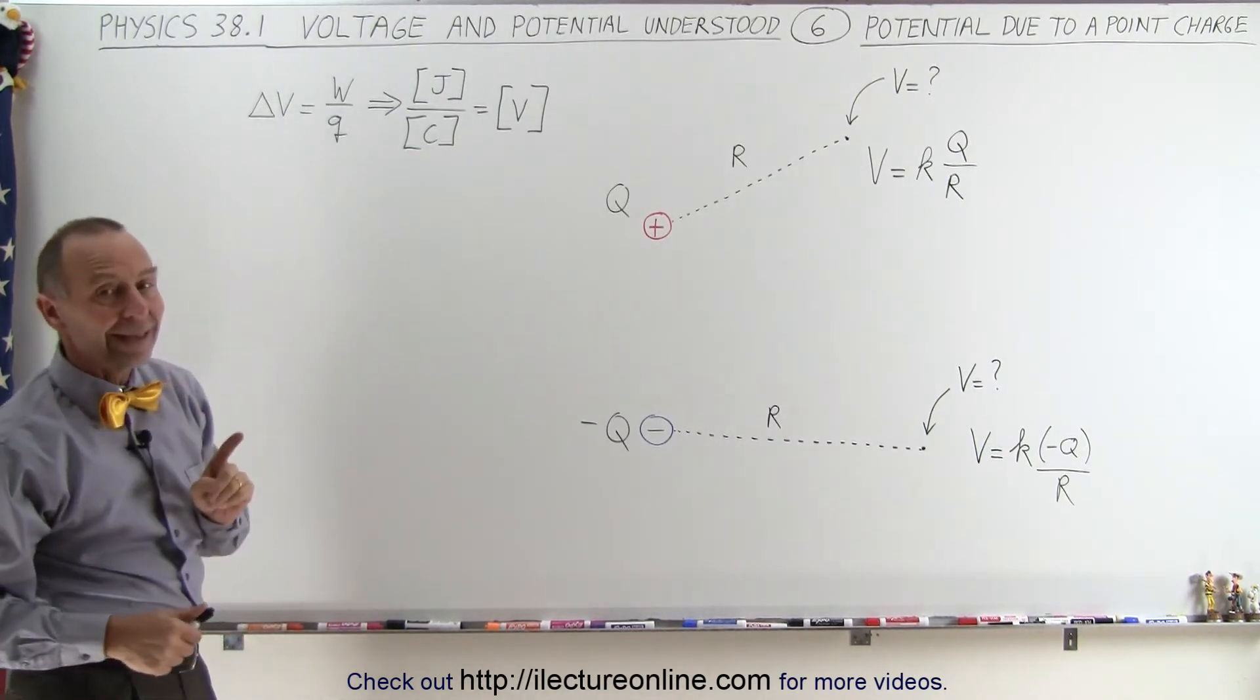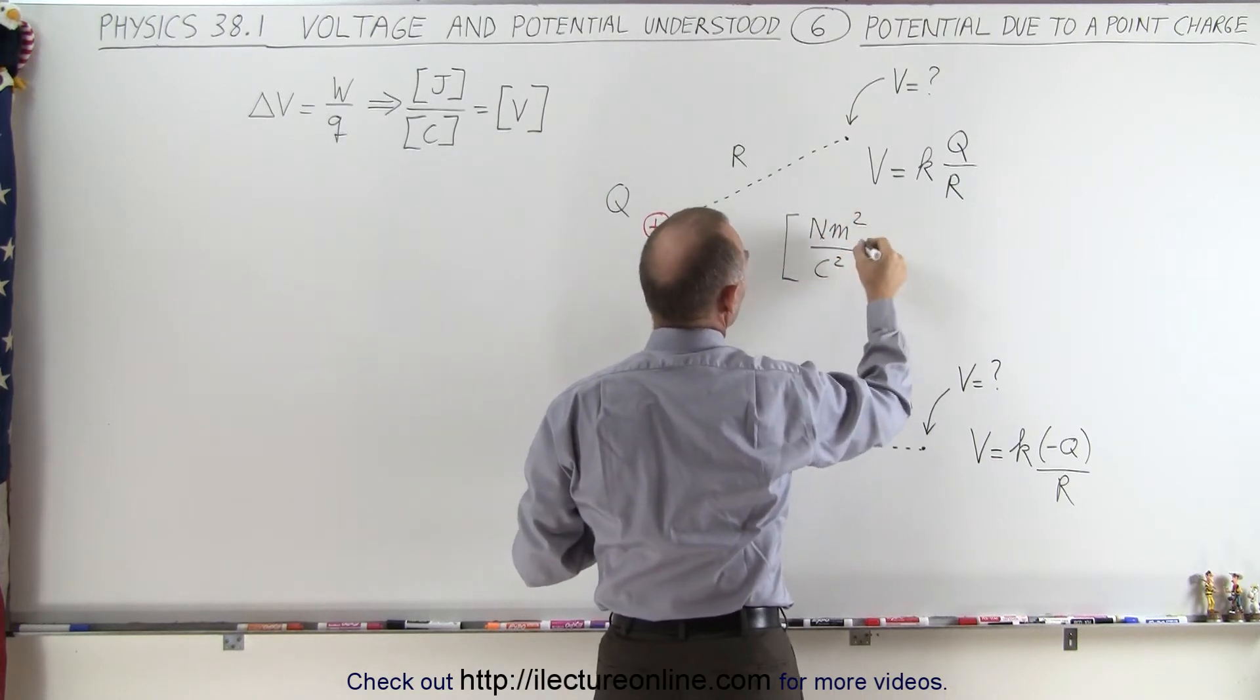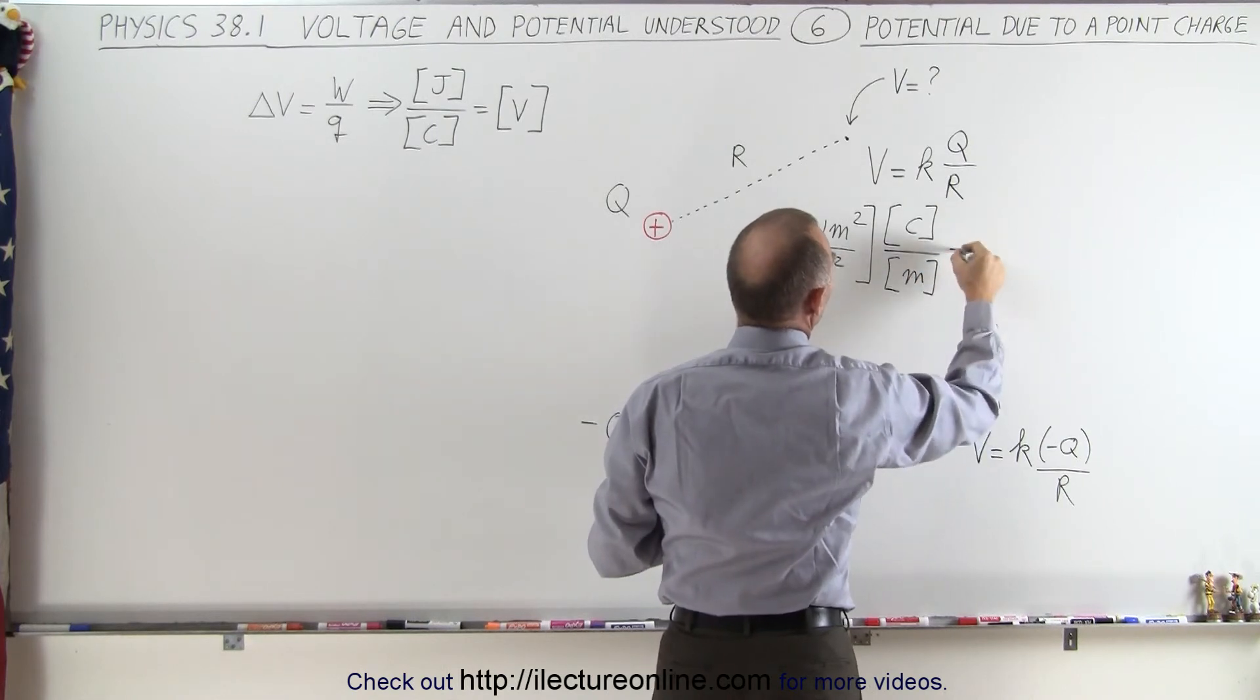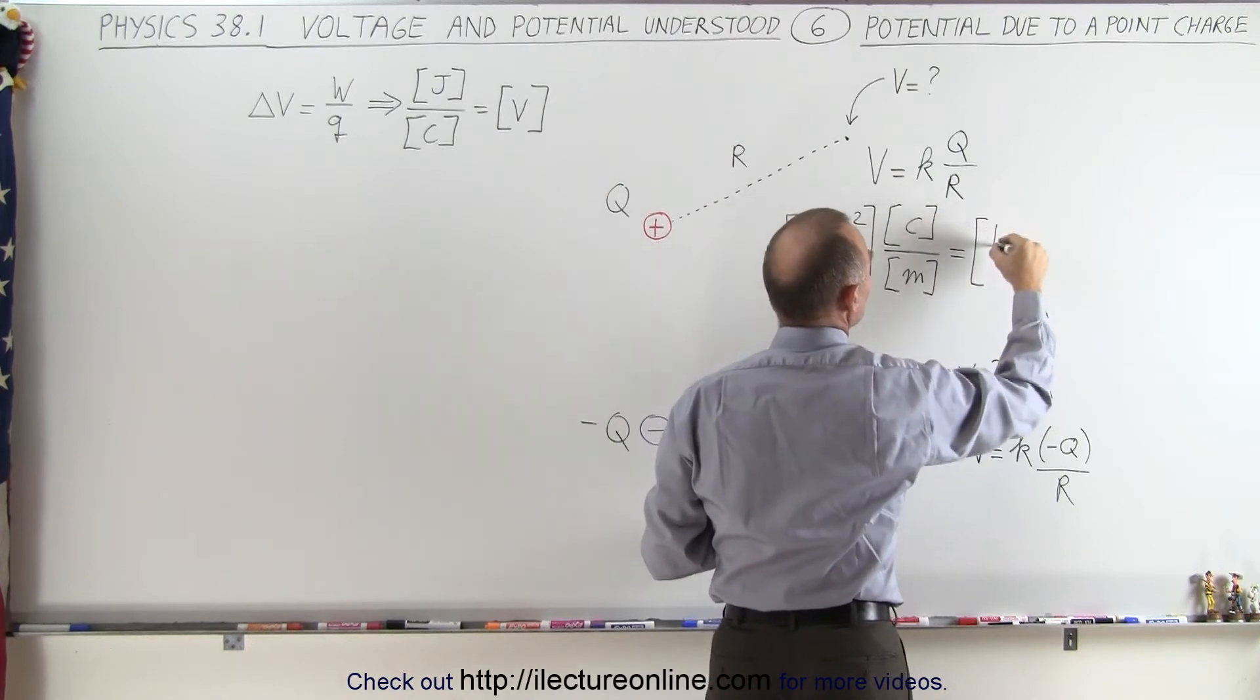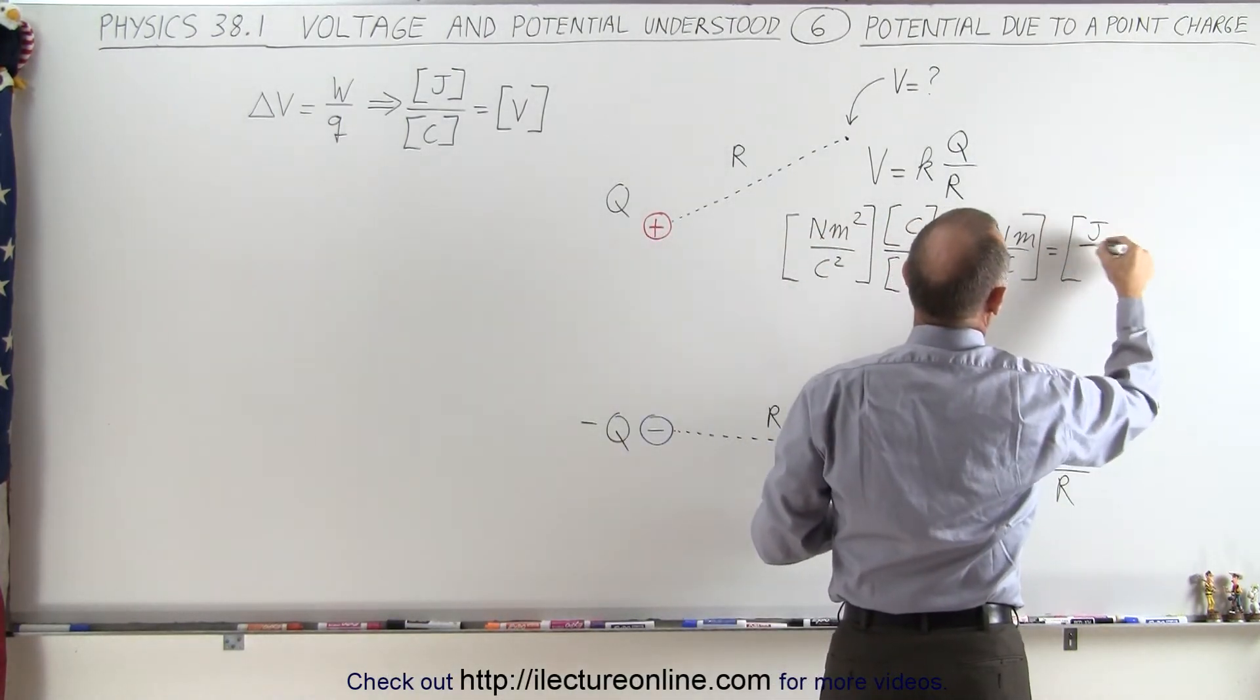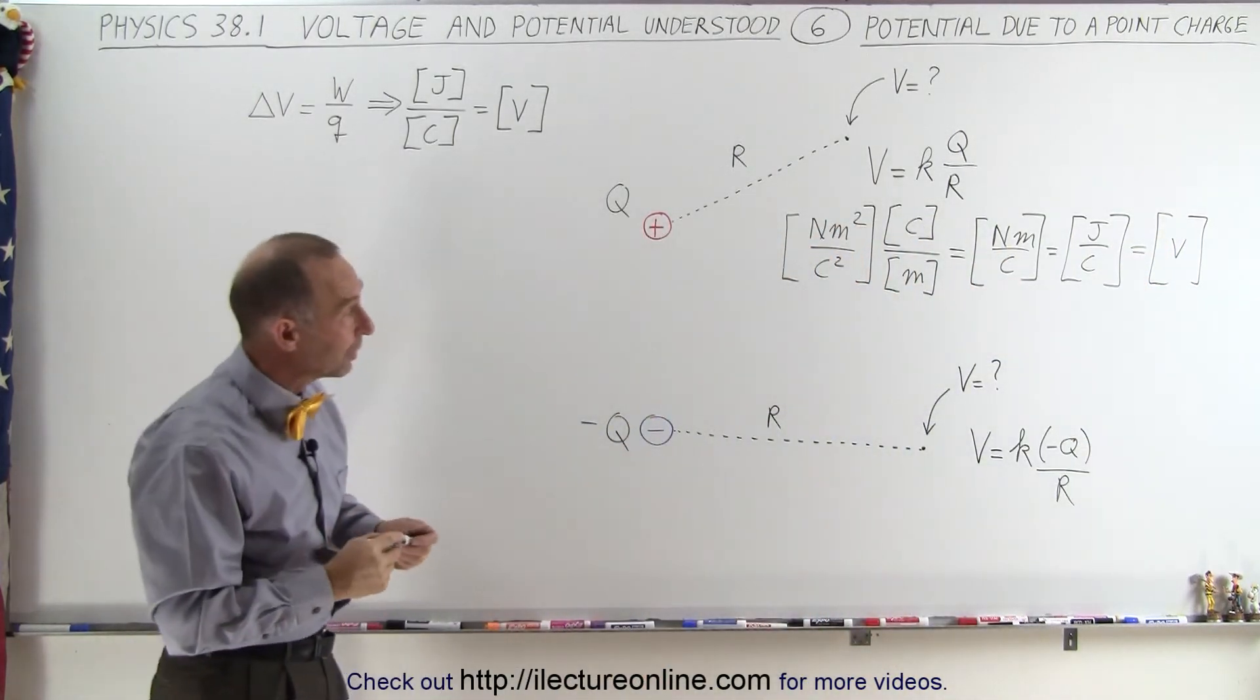Now let's see if we get the same units when we use this equation. The units for K is newtons meters squared per coulomb squared. Then we multiply that times the units for charge, which is coulombs, divided by the units for distance, which is meters. And notice that one of the coulombs cancels out, one of the meters cancels out. This gives us the units of newton meter per coulomb. And newton meter, well that's the same as joules. So we get joules per coulomb. And just as we saw before, joules per coulomb is defined as volts. So you can see that the units do indeed work out.